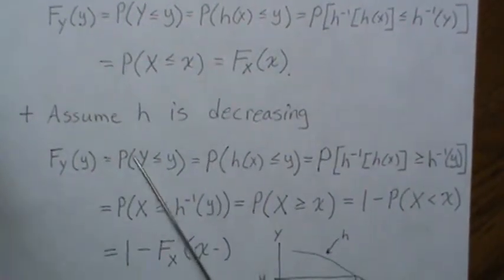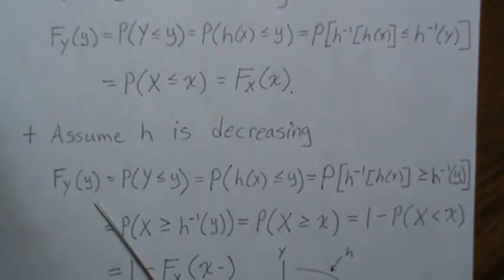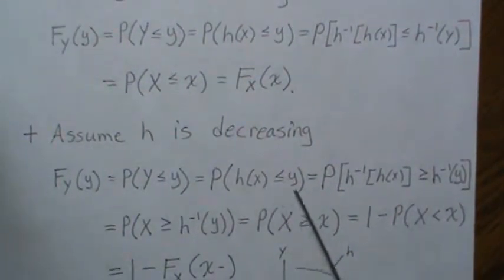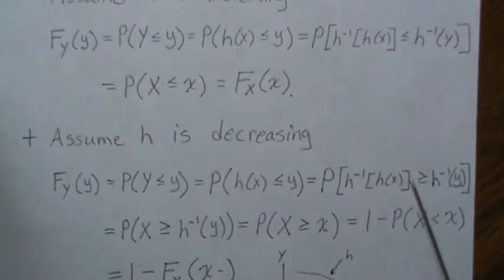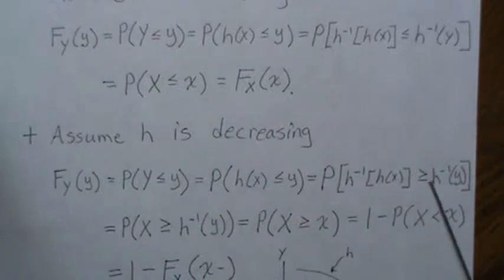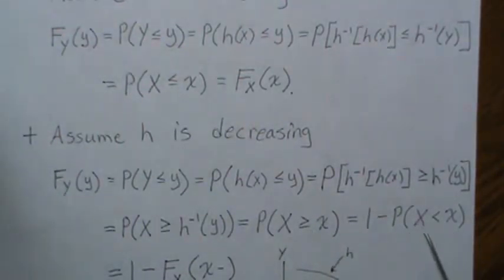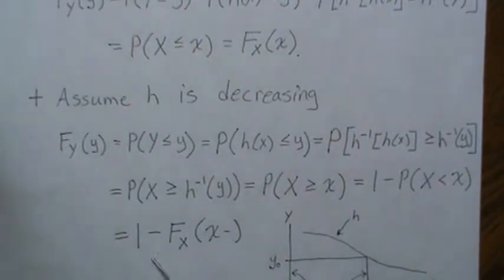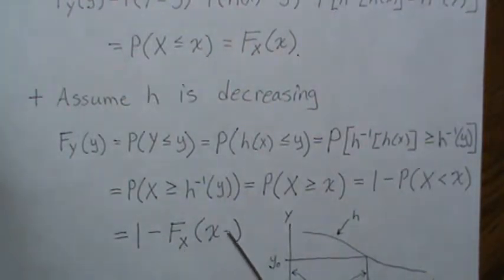One tricky note: if H is decreasing, the formula is a little different. The CDF of Y is P(Y ≤ y) = P(H(x) ≤ y), but when we take the inverse image of both sides, the inequality changes from less than or equal to to greater than or equal to. This gives P(X ≥ H⁻¹(y)), which equals 1 minus P(X < H⁻¹(y)), which is 1 minus the CDF approaching from the left. If F is continuous, the left-limit equals the CDF value directly.